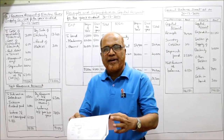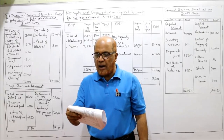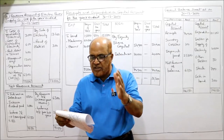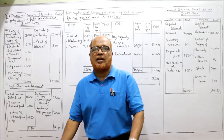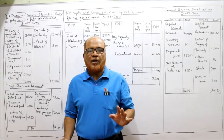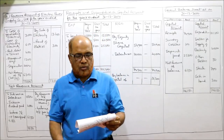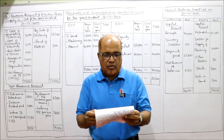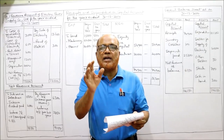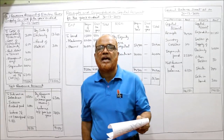Now starting problem number 6: from the following balances as on 31st December 2000 appearing in the ledger of Electric Light and Power Company Limited, you are required to prepare a revenue account, net revenue account, capital account, and general balance sheet — all four parts of the financial statement. Equity shares will go to the capital account, debentures to the capital account, and land (value given on 31st December 1999) becomes the current year's opening balance.